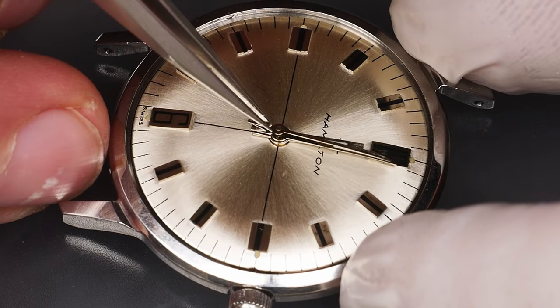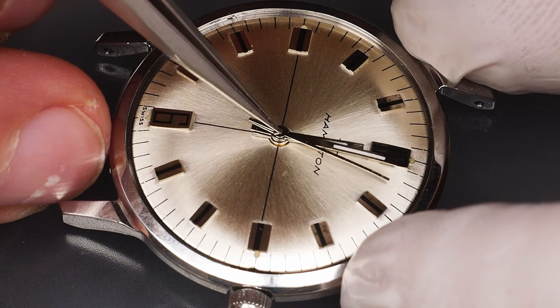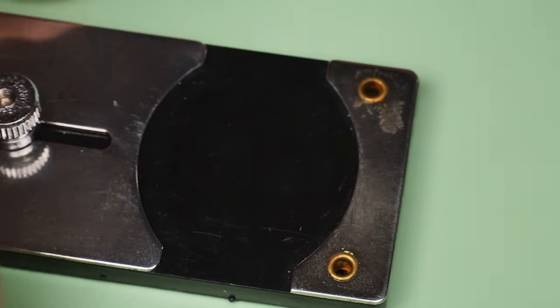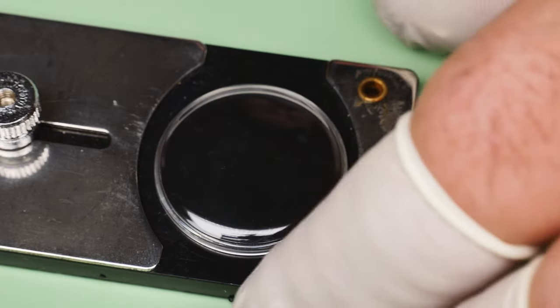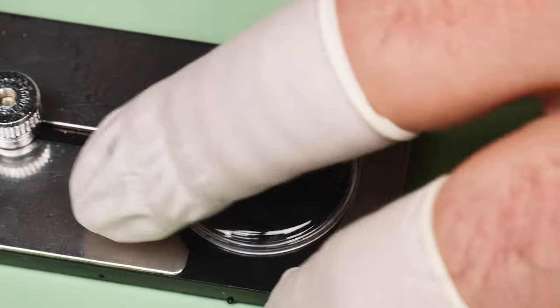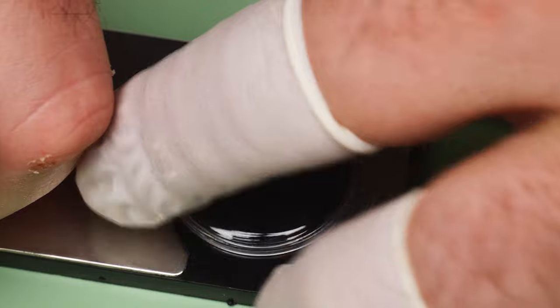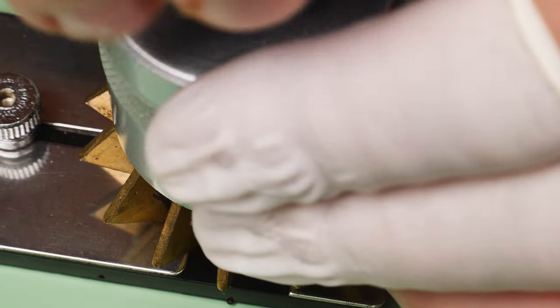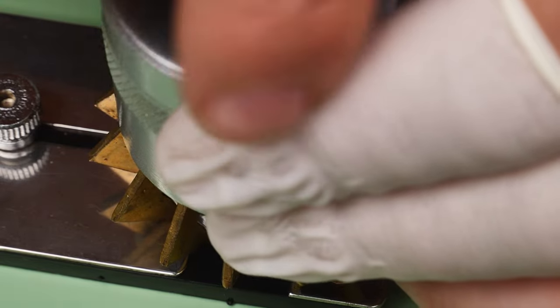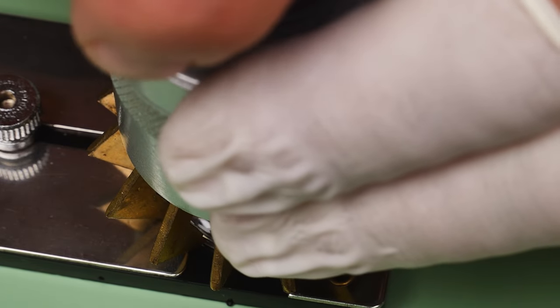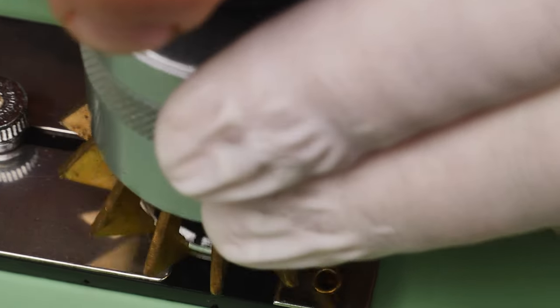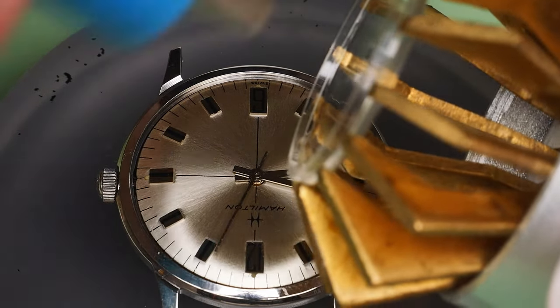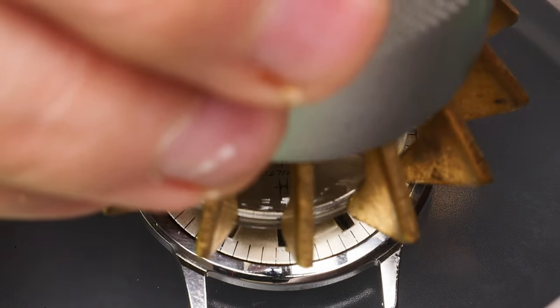The sweep seconds hand is refitted. Reinstalling the acrylic crystal is basically the opposite from removing it. I use this jig to hold the crystal steady and align the arms of the claw further up the edge of the crystal. When I tighten the claw up, it compresses the crystal so it'll fit into the case.